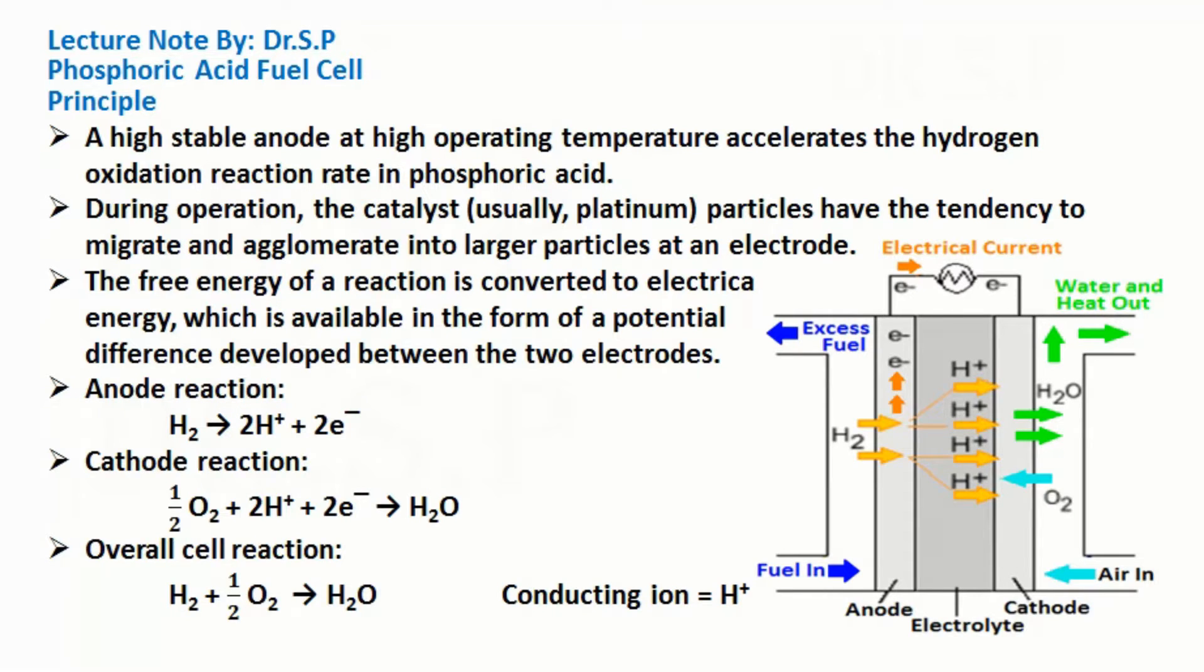As we all know, at the anode there is an oxidation reaction and at the cathode there is a reduction reaction. And conducting ions in such cells is a hydrogen ion, simply we can say H+ ions.